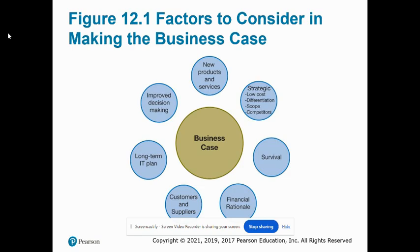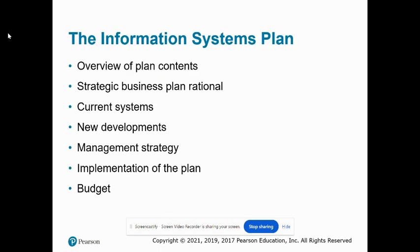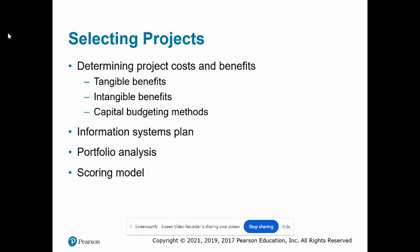Developing an information system solution is based ultimately on the problem-solving process. Here we look at the overall information systems plan, moving on to determining project costs, which includes those tangible and intangible benefits, and then the information systems plan itself.